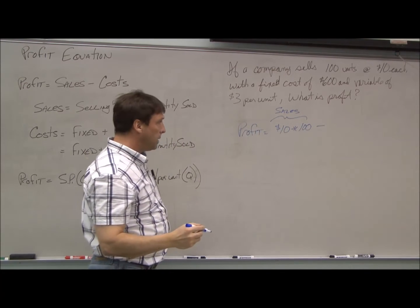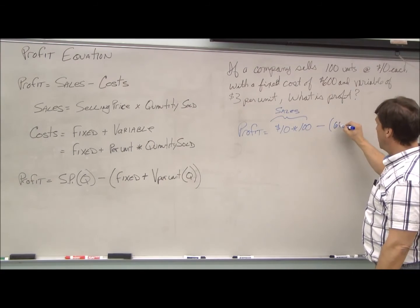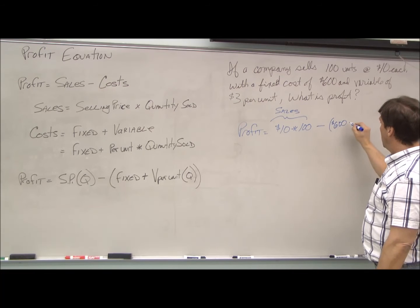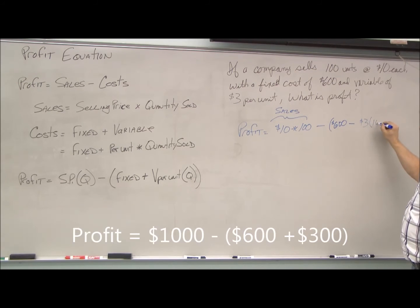From that, we're going to subtract our fixed cost of $600 minus our variable cost of $3 times the 100 units. So this is our cost.